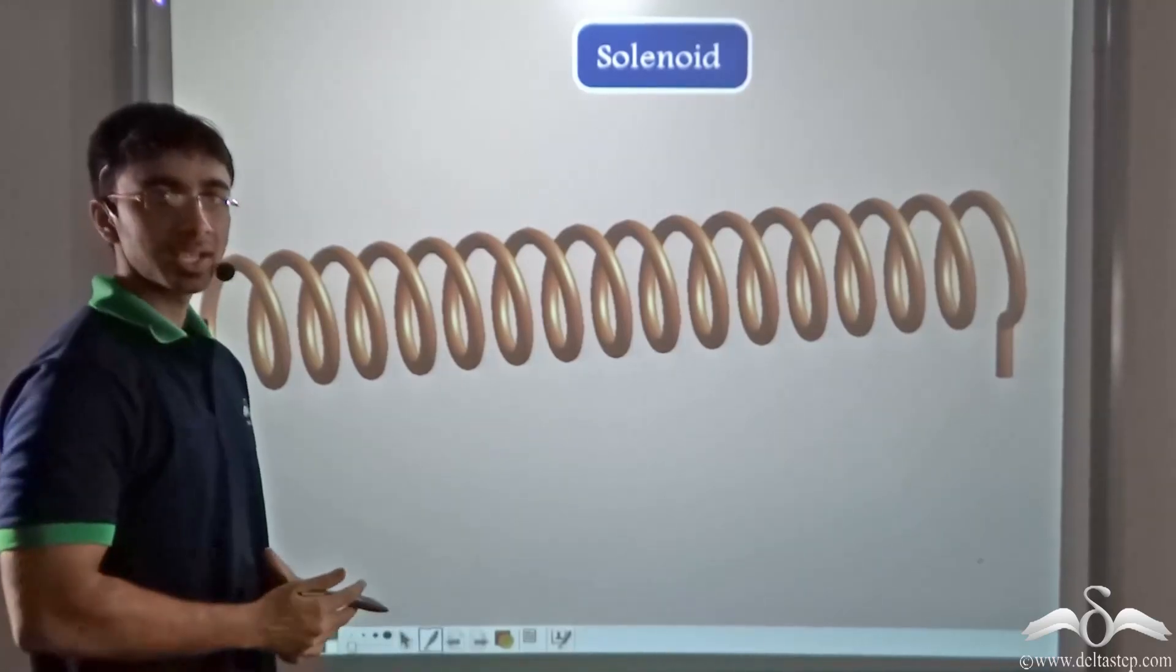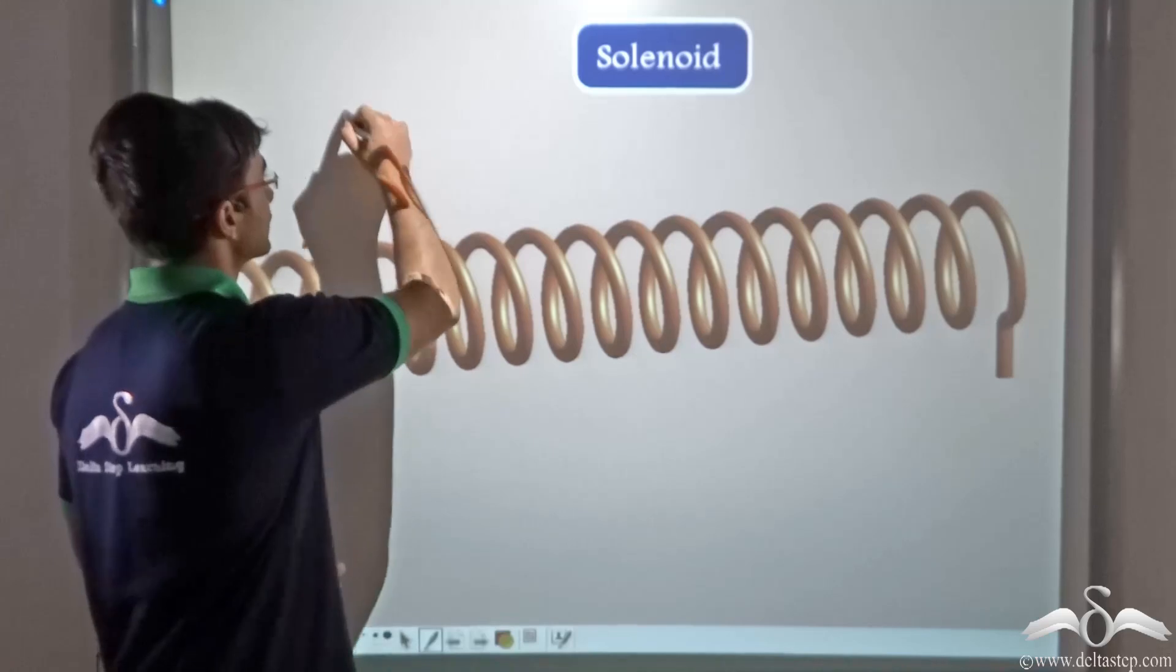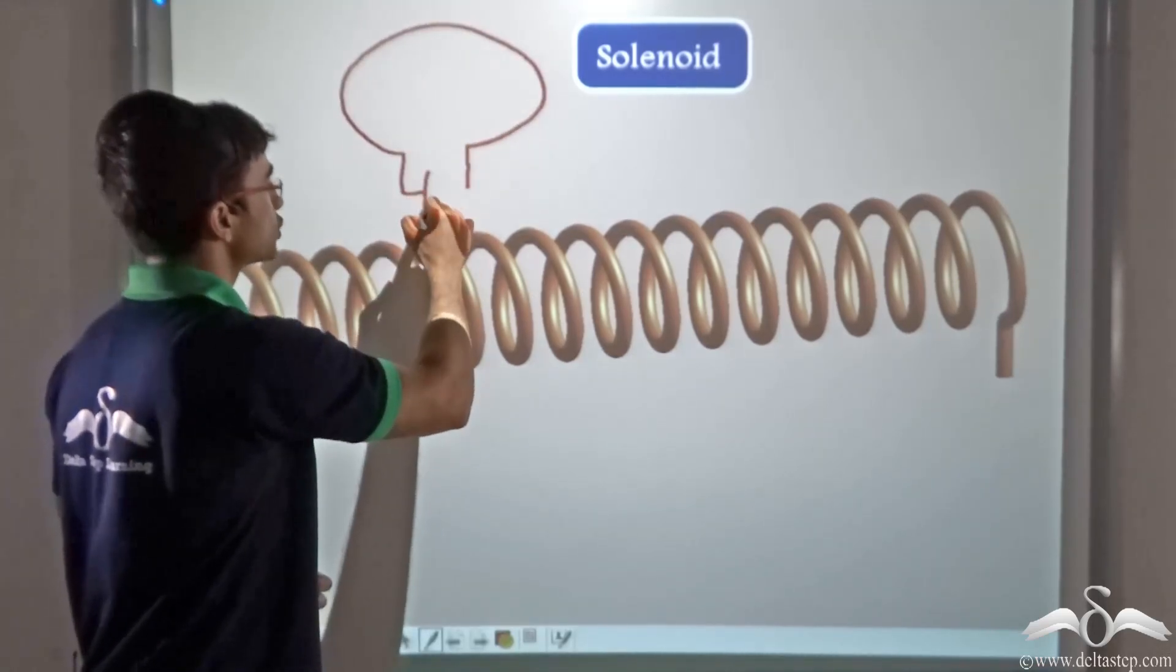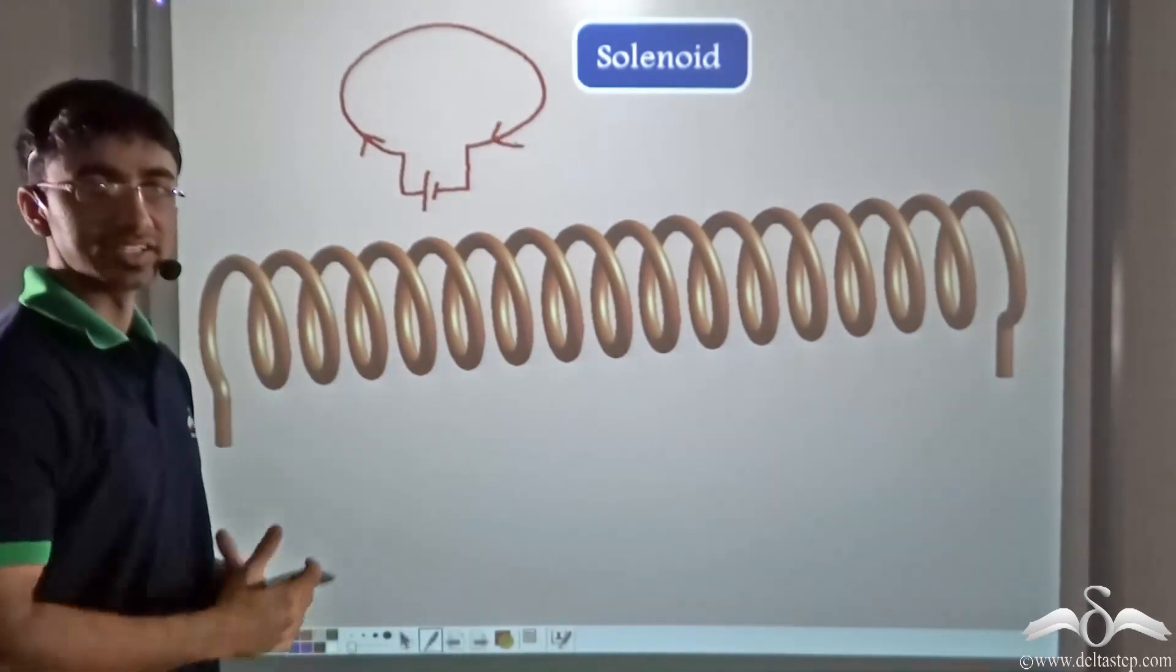Now this is a copper wire. Earlier we have studied how we can twist a copper wire in the shape of a circular loop, and if current flows through this loop then a certain magnetic field is generated.